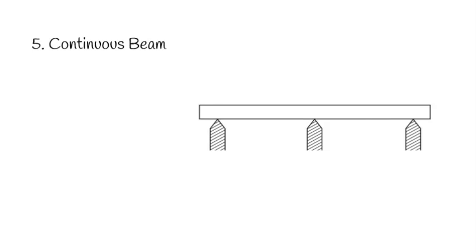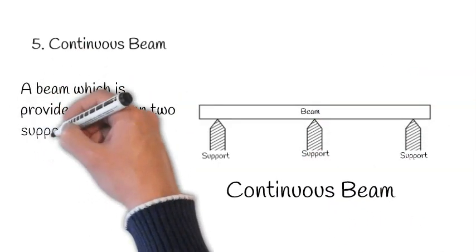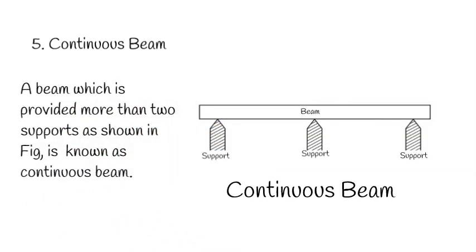5. Continuous Beam: This is the support, more than two supports. A beam which is provided more than two supports as shown in figure is known as continuous beam.